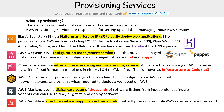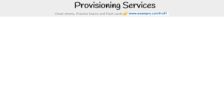We have AWS Amplify. This is a mobile and web app framework that will provision multiple AWS services as your back end. It's specifically for serverless services, like DynamoDB, AppSync, API Gateway, and things like that.